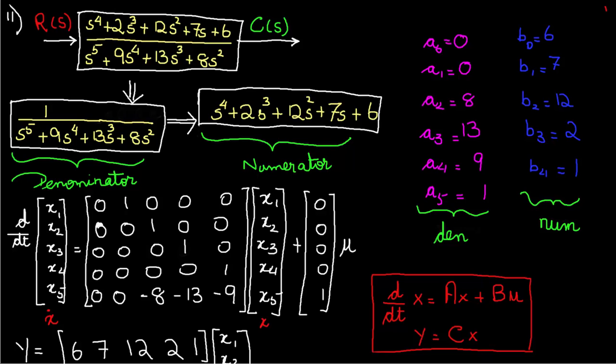All right, so today I'm going to go over problem 11 from homework 4. This is the second problem for number 11, and for this problem we are given a transfer function and we are to find the state space for the problem.